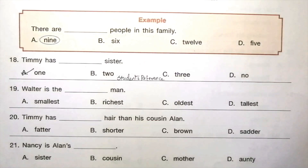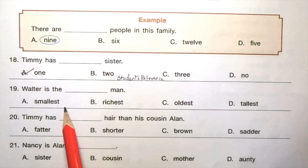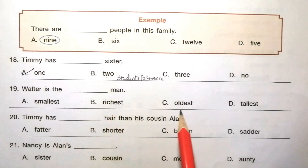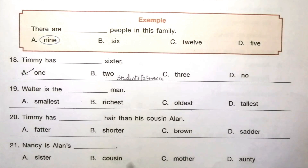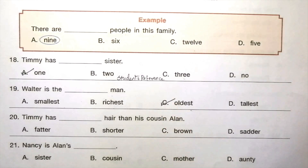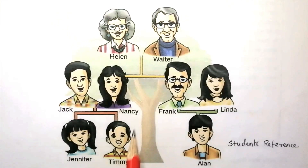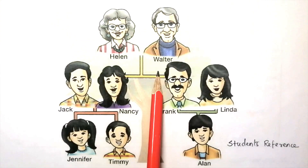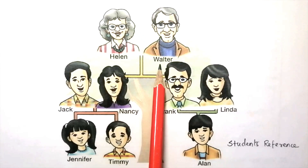Question 19: Walter is the dash man — smallest, richest, oldest, tallest. The answer is C, oldest. Walter is the oldest man. Look at the picture — Walter is the first generation man, so he is the oldest man.